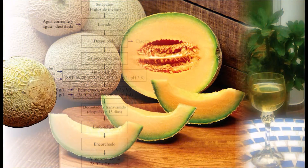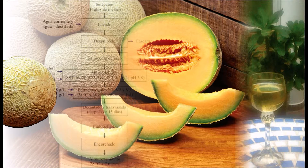The trials conducted for the chemical variables used a completely randomized design with three treatments. The wines were elaborated from 8 liters of pure melon juice, with initial concentrations of soluble solids of 16, 20, and 25 grados Brix, total acidity 5.5 grams per liter, and pH 3.8.